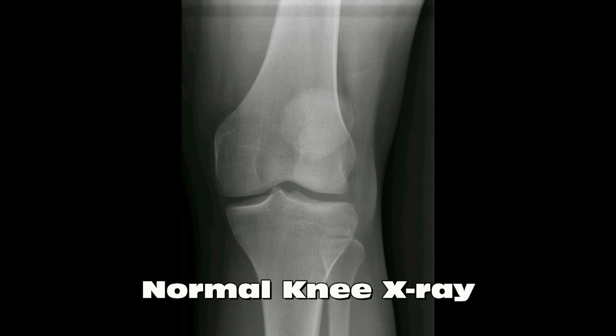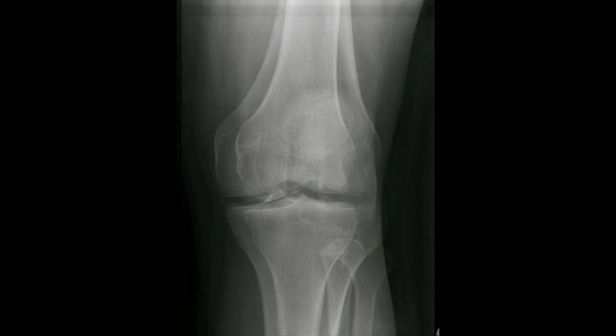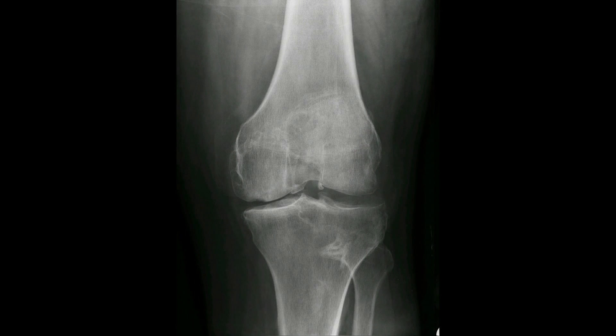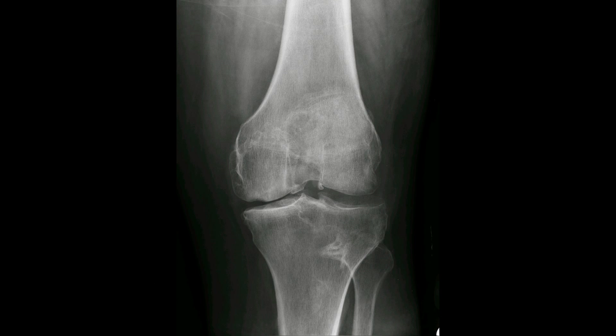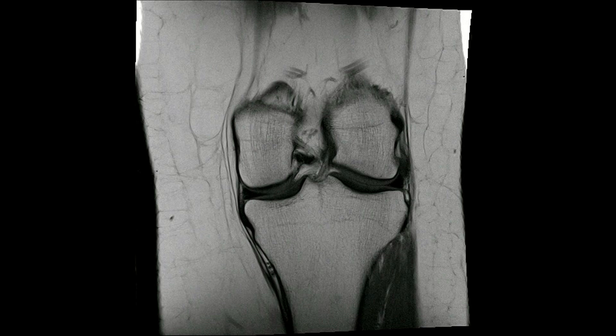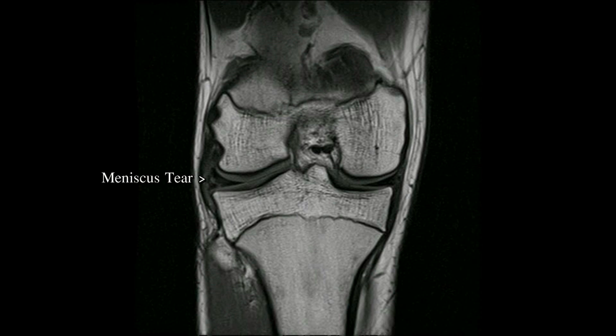While the menisci are not visible on X-rays, X-rays are important for ruling out other causes of knee pain such as fractures, loose bodies, and osteoarthritis. A meniscus tear can, however, usually be seen on an MRI. Once a meniscus tear is identified, the decision is often made to proceed with knee arthroscopy.